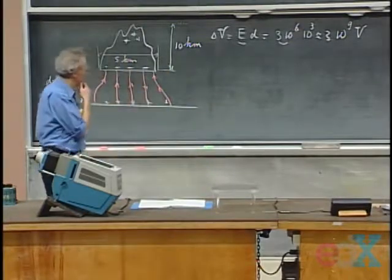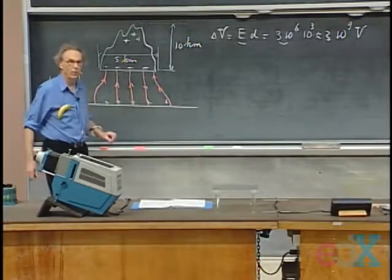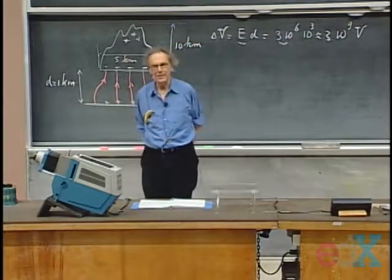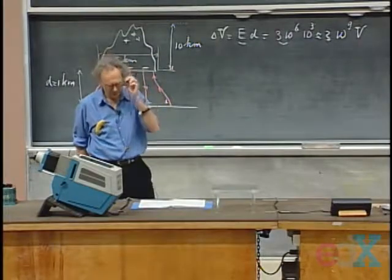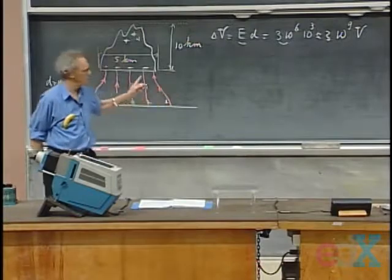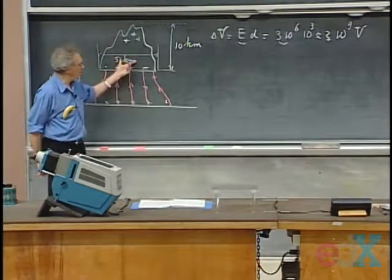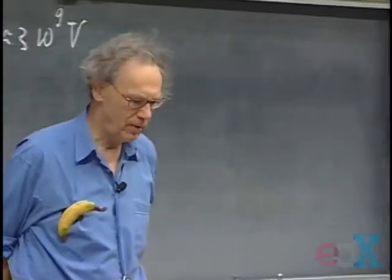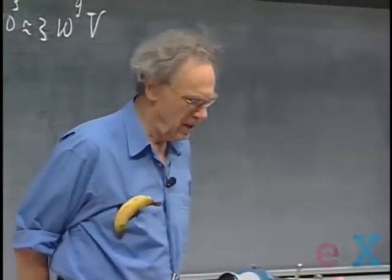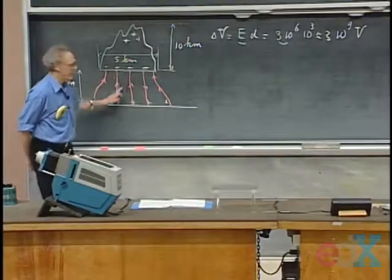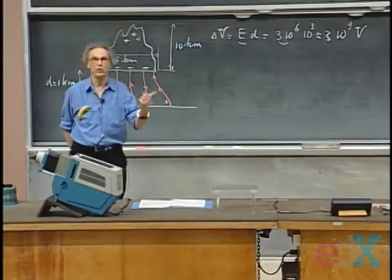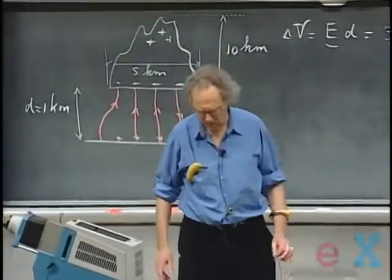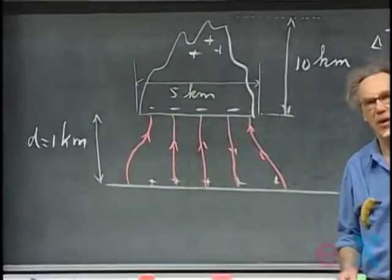The lightning begins when electrons flow from the cloud to the earth. They form a funnel about one to ten meters in diameter — the step leader — which moves at about 100 miles per second, reaching the ground in about five milliseconds and carrying about half a coulomb to earth, meaning a current of about 100 amperes. The step leader creates a channel of ionized air full of ions and electrons — an extremely good conductor.